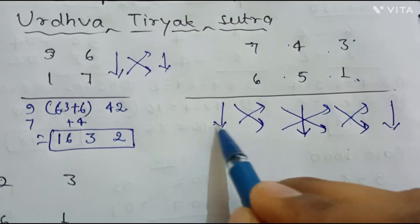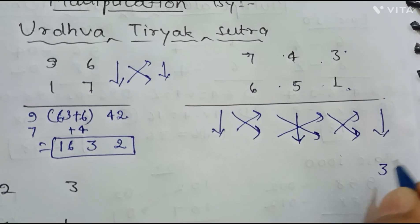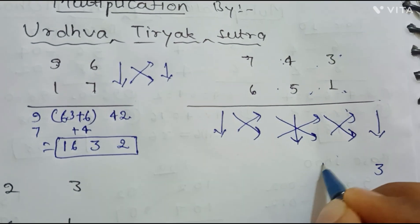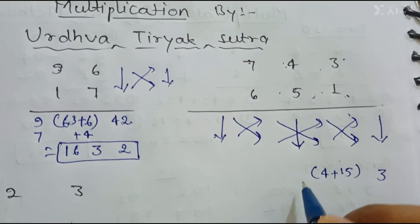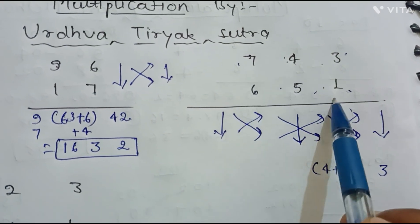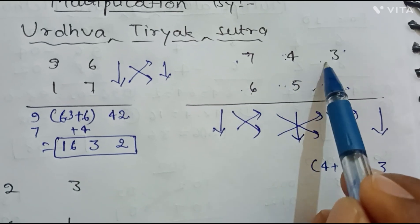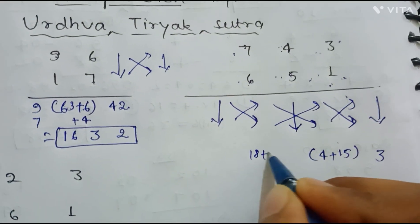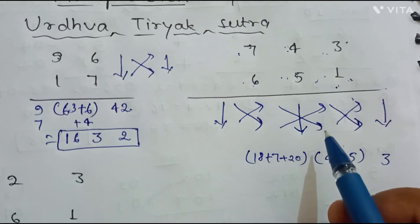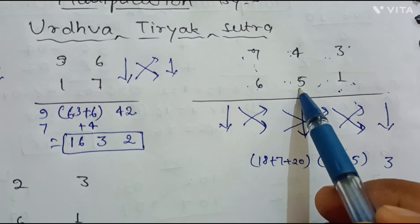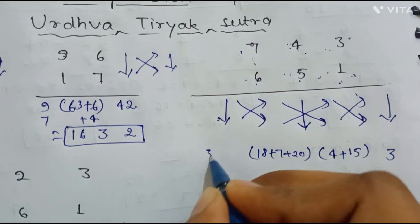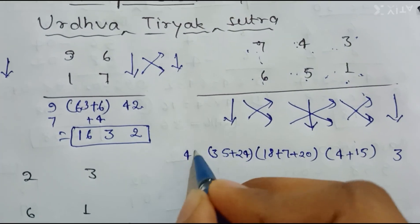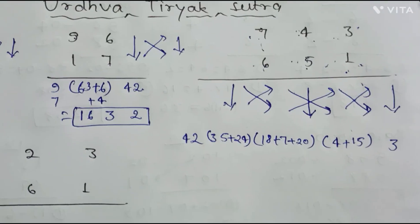First, 3×2 is the vertical multiplication, so we write 6. The second step: 4×1=4 plus 5×3=15. The third step — crisscross plus vertical: 6×3=18, 7×1=7, and 5×4=20, giving 18+7+20=45. The fourth step is again crisscross: 7×5=35 plus 6×4=24, giving 59. The final step: 7×6=42 vertically.